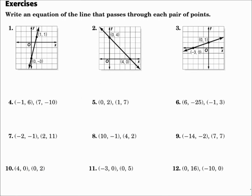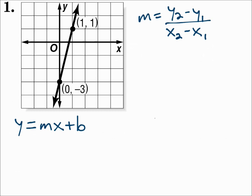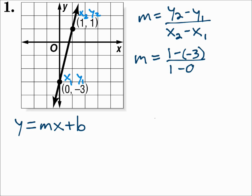Write an equation of the line that passes through each pair of points. Number 1: what about the line through 0, negative 3, and 1, 1? Find the slope first using the slope formula. We'll have 0, negative 3 be x1, y1 and 1, 1 will be x2, y2. In the formula: y2 is 1 minus y1 is negative 3, over x2 is 1 minus x1 is 0. That gives you 4 over 1, which is 4. So the slope is 4. You can see in the picture that the slope is 4 — between those two points you rise 4, run 1.